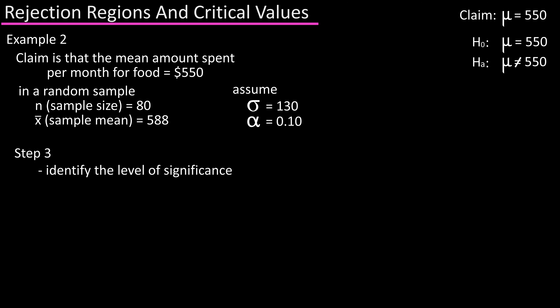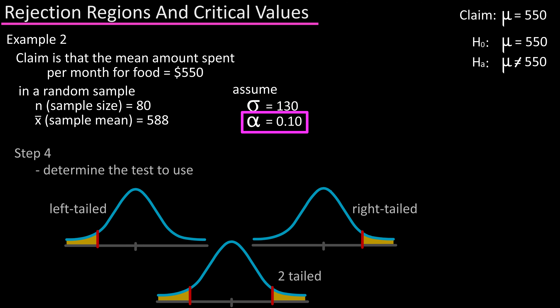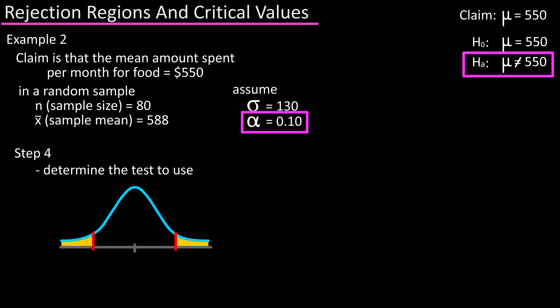Step three: the level of significance was given as alpha equals 0.10. Step four: determine the test to use. Because the alternative hypothesis contains the does-not-equal inequality, this will be a two-tailed test.